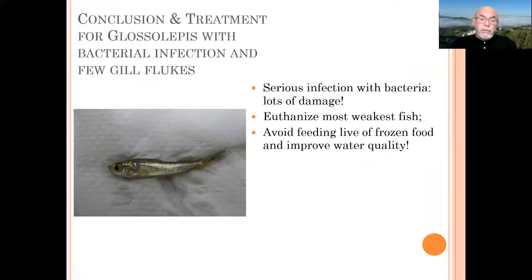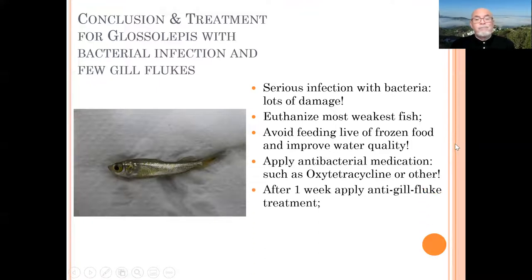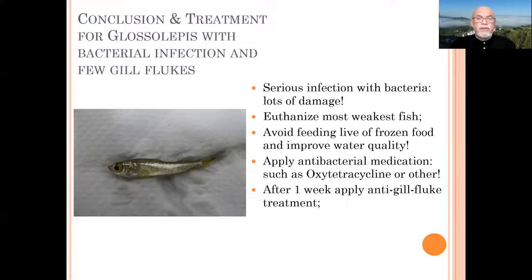For prevention, check your frozen or live food, because some contain a high microbial load that can impact fish health. Also check the water quality. Apply antibacterial medications — we recommend oxytetracycline or another option. After one week, apply an anti-gill fluke treatment, because here we recommend treating the bacterial infection first as it's the most severe. With a few gill flukes potentially becoming more severe in coming days, you apply a treatment against the flukes one week later.